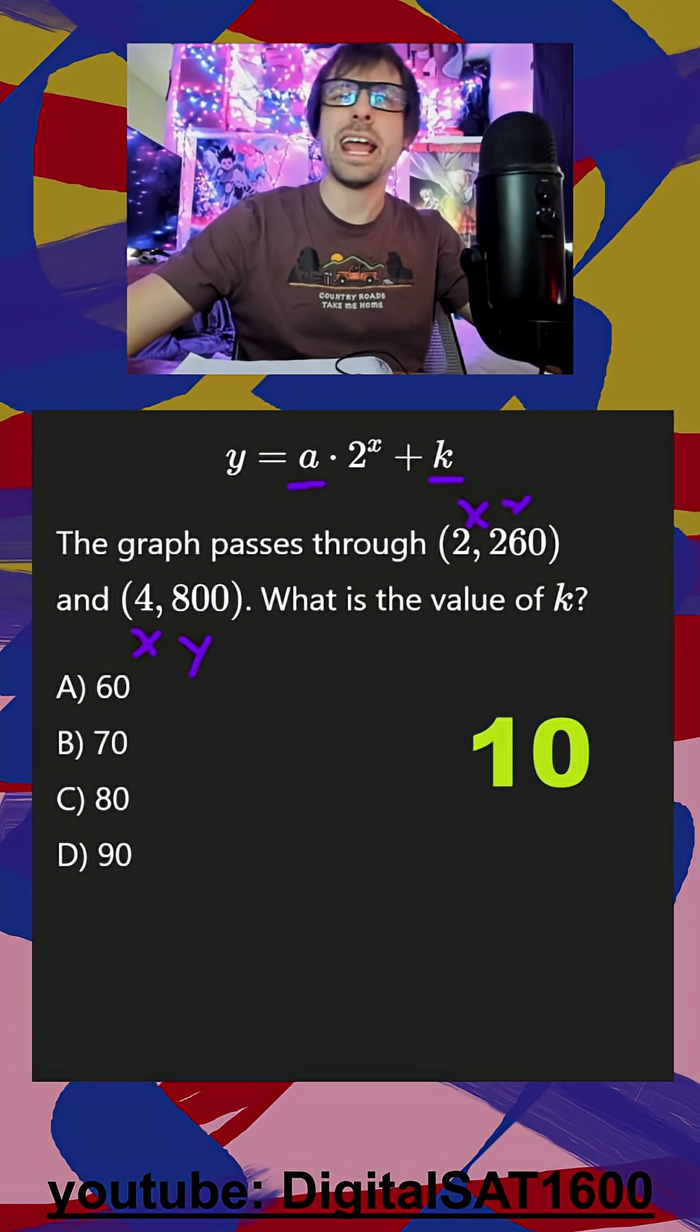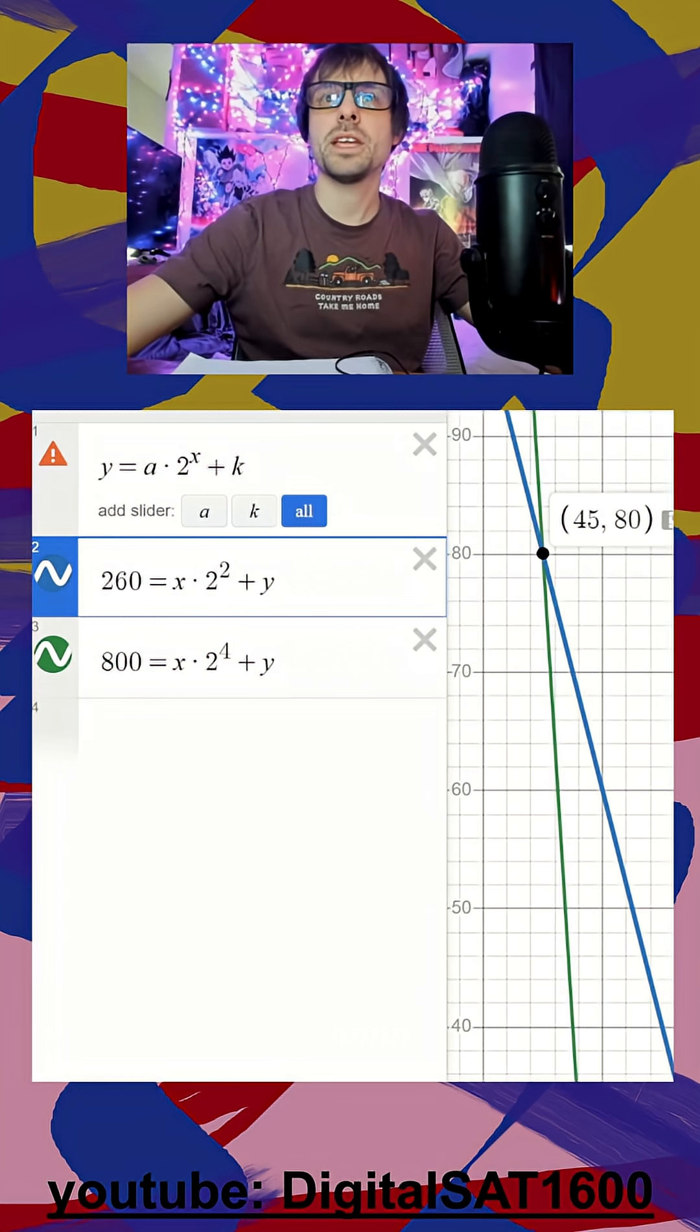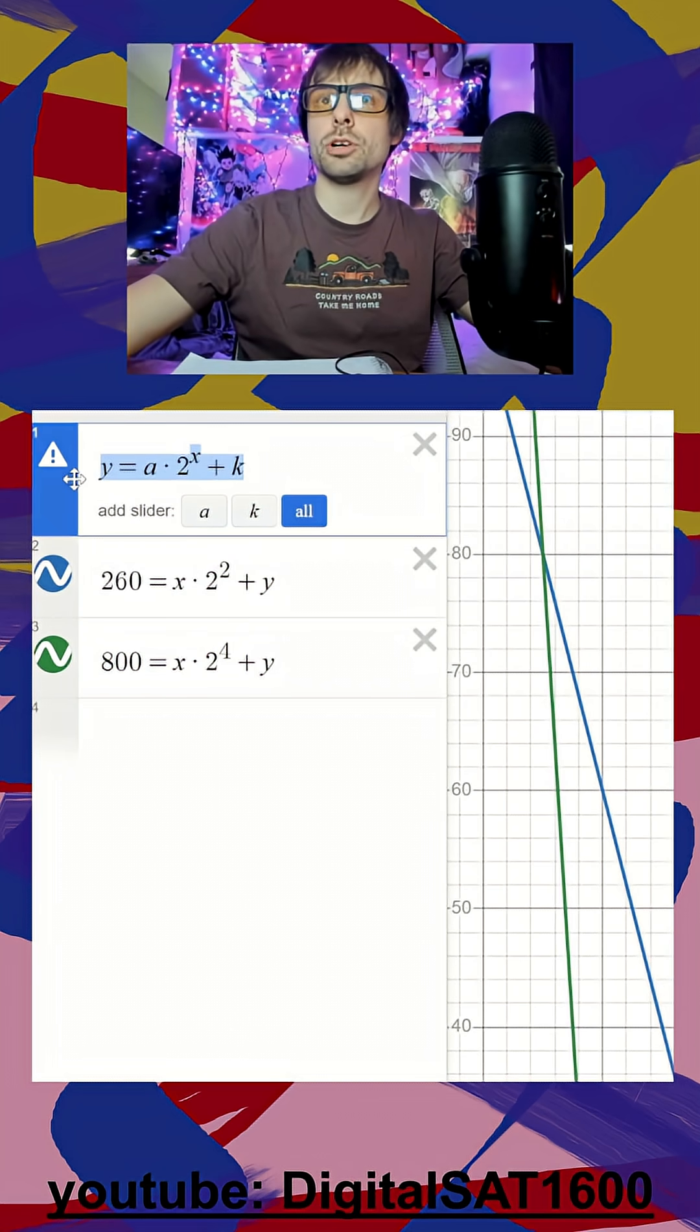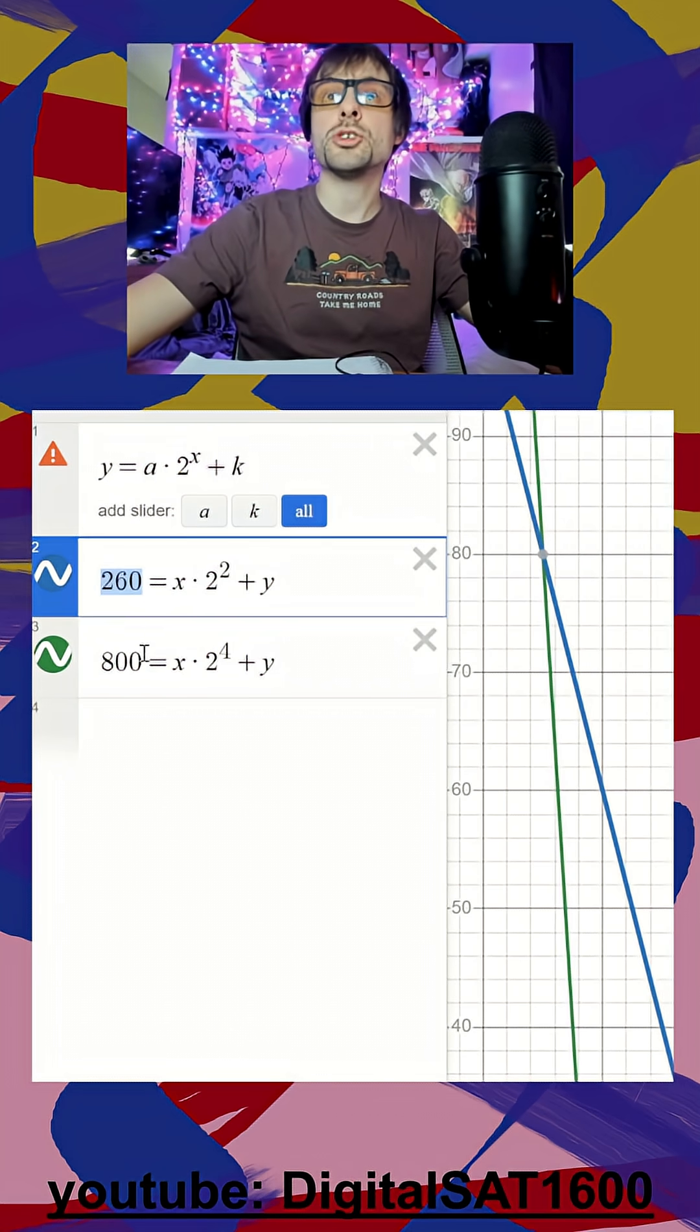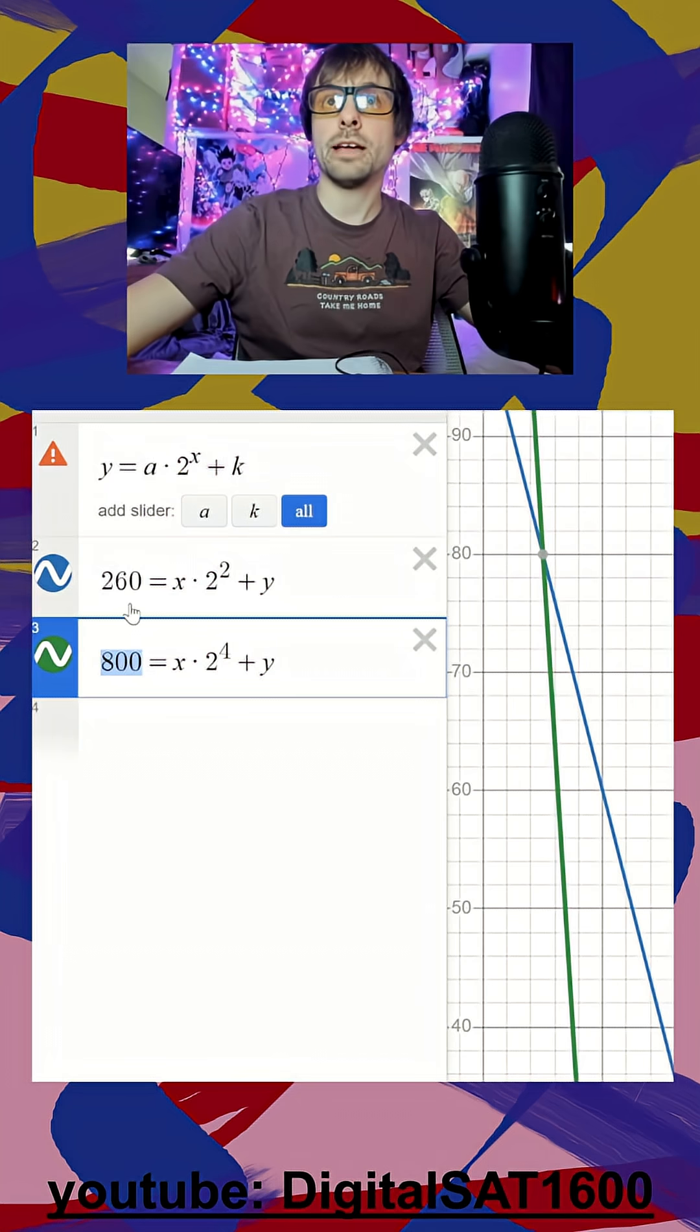So I'm going to pull up the kind of by hand but on Desmos way first and that's going to be we have our original equation. All I did was made two new equations replacing the y with my two y values.